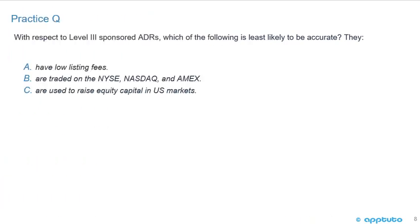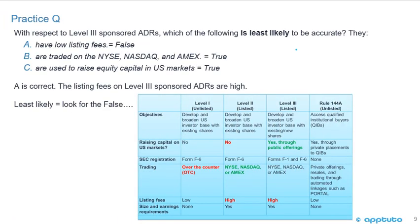Practice question: with respect to Level 3 sponsored ADRs, which of the following is least likely to be accurate? A, they have low listing fees; B, they are traded on the NYSE, NASDAQ, and Amex; C, they are used to raise equity capital in U.S. markets. The answer is A — Level 3 ADRs are listed, so they have high listing fees, not low. B and C are both true for Level 3.